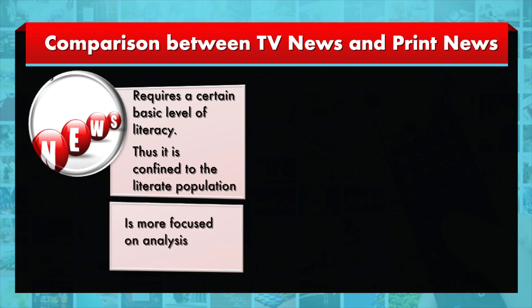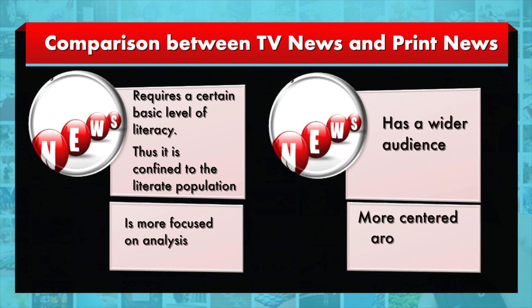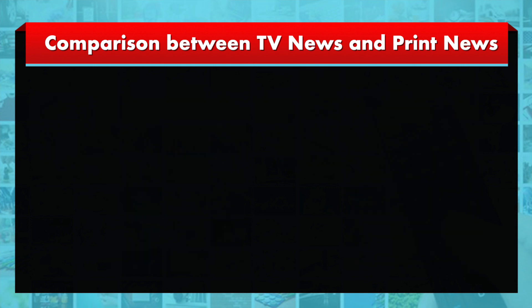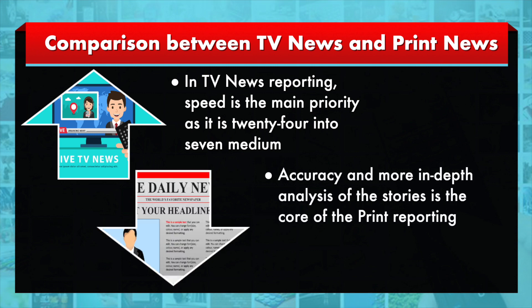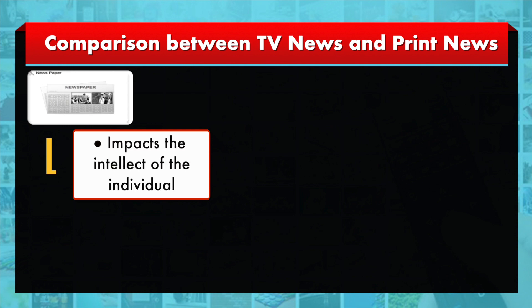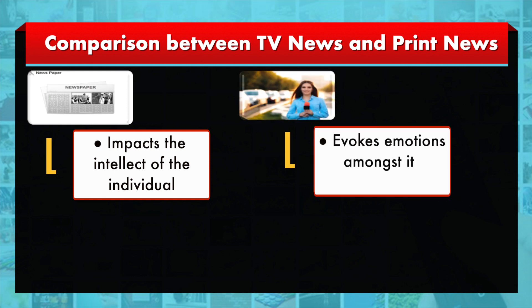Many times this is cited as the reason that print news is more focused on analysis, whereas TV news is more centred on the event itself. In TV news, reporting speed is the main priority as it is a 24/7 medium, whereas accuracy and more in-depth analysis are the core of reporting in print media. It is often concluded that print medium impacts the intellect of the individual, whereas TV news often evokes emotions among its viewers.